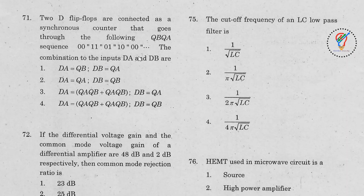For the delay flip-flop, the outputs are QA and QB. They've given a synchronous counter sequence and we need to find the values of DA and DB. There is actually a printing mistake in the question — a bar is missing. So DB equals QB-bar, and DA equals QA-bar · QB-bar. This is the correct answer.